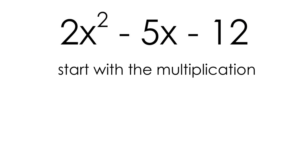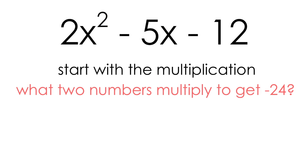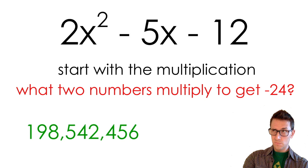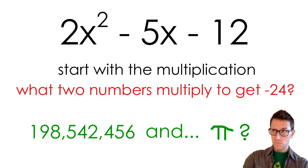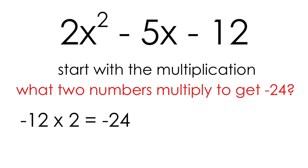I find it easiest to start with the multiplication. So what are two numbers that multiply to get negative 24? I find it works best if you just start with the pair of numbers that first pop into your head. Let's say those numbers were negative 12 and 2. Negative 12 and 2 multiply to get negative 24. But I could also choose to make the 2 negative and the 12 positive. However, neither of these combinations will add to get negative 5.